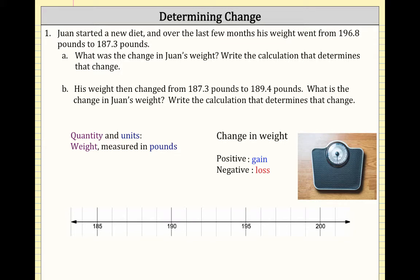Looking at the question, Wan's weight started at 196.8 pounds and finished at 187.3 pounds — the green dot is the start and the red dot is the end. In mathematics, these may also be called the initial point and the final point. Another way is to say point of reference, which always refers to the point you're starting or measuring from.